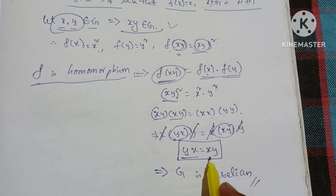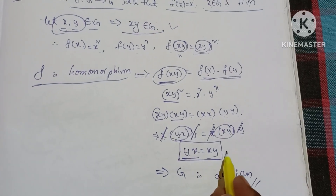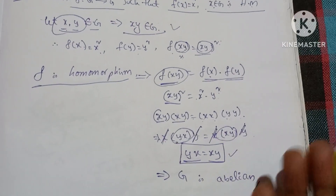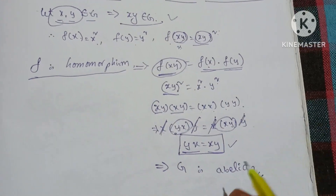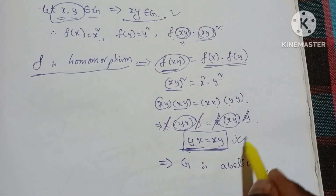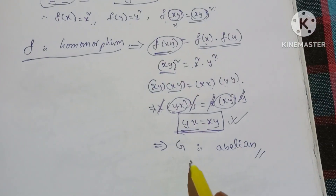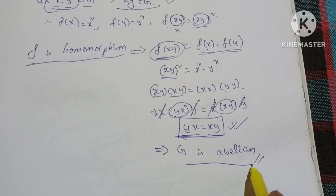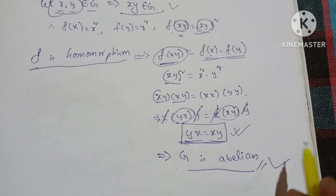Therefore yx = xy, which means G is abelian.